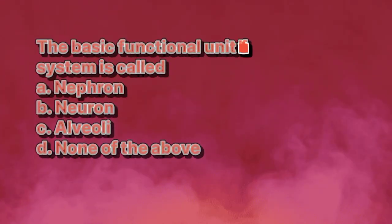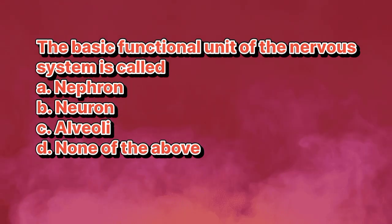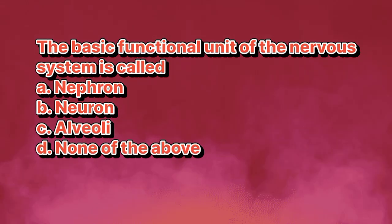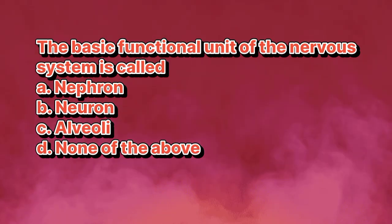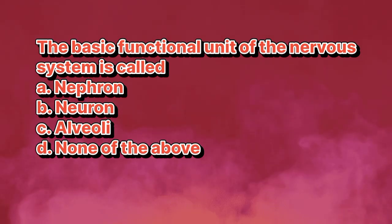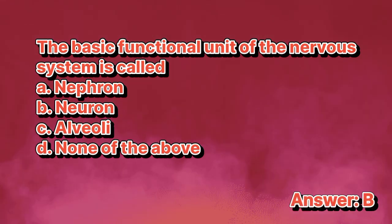The basic functional unit of the nervous system is called: A. Nephron. B. Neuron. C. Alveoli. D. None of the above. The answer is letter B.